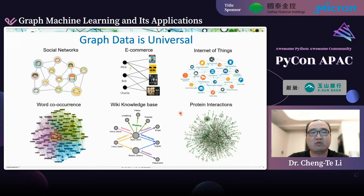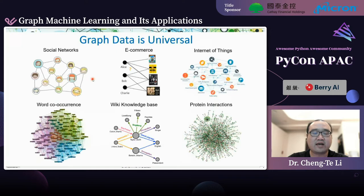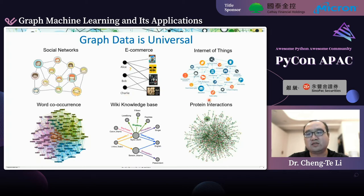Today we focus on graph data, which is very universal. In social networks and social media, we can obtain a graph connecting people through friendship. In e-commerce platforms, we have users and items they've browsed or purchased, and we can construct a bipartite graph to depict user-item relationships. In the Internet of Things, physical devices serve as nodes and communications between devices form the links to build an IoT graph.